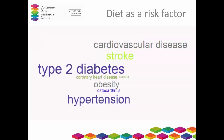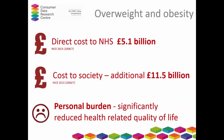Diet is the leading risk factor for a number of non-communicable diseases, including overweight and obesity. Overweight and obesity is a huge problem in the UK and throughout the world. The direct costs to the NHS for overweight and obese individuals is £5.1 billion, with a wider cost to society of an additional £11.5 billion pounds. This doesn't take into account personal burden — there's lots of evidence to suggest that overweight and obese people have a significantly reduced health-related quality of life.